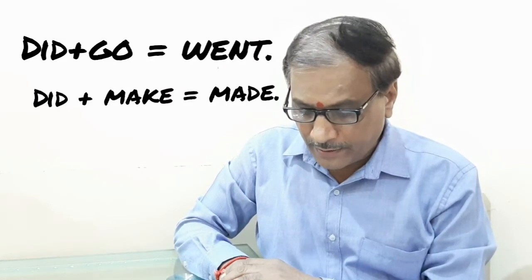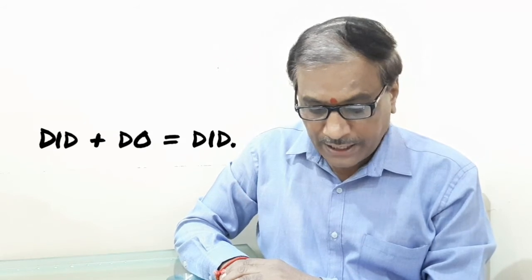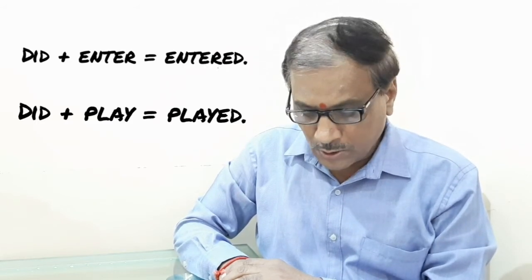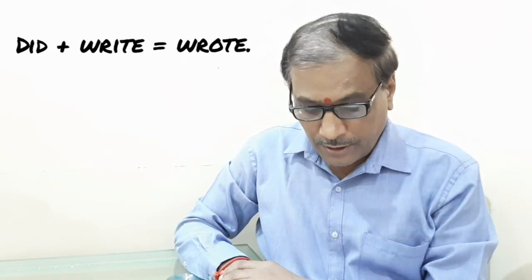Now, simple past verbs are there. We will practice some simple past verbs. Did + go = went, did + make = made, did + do = did, did + enter = entered, did + play = played, and did + write = wrote. In this way, we can prepare the simple past verbs.